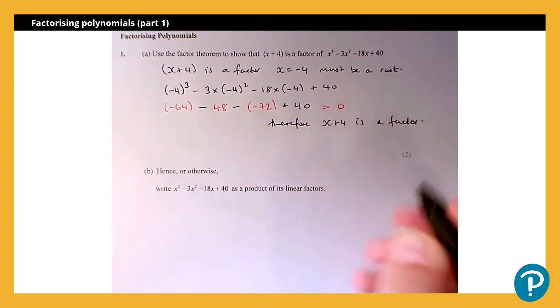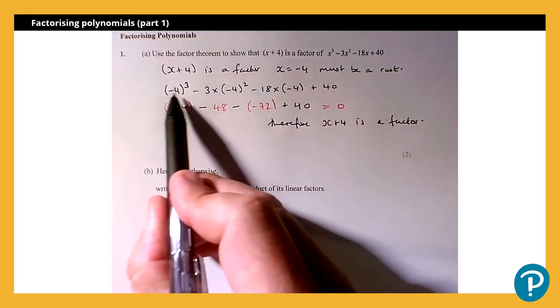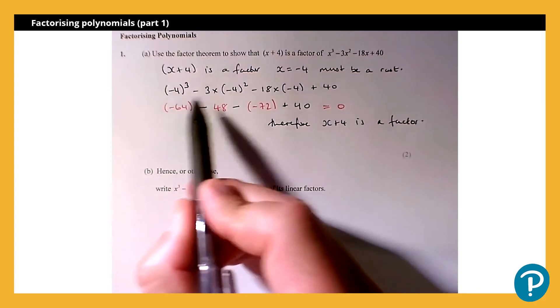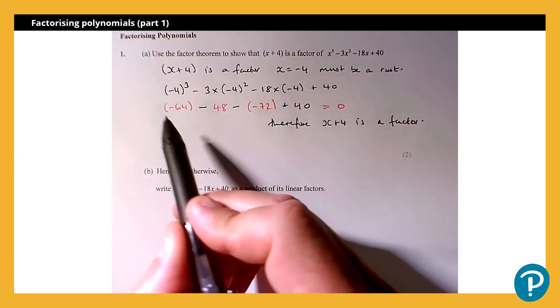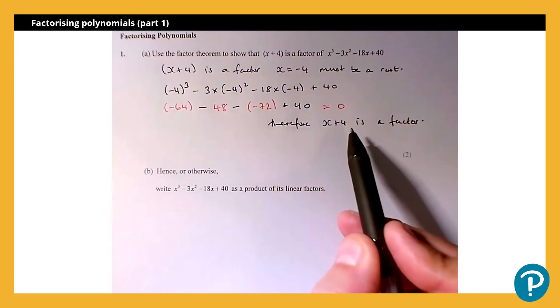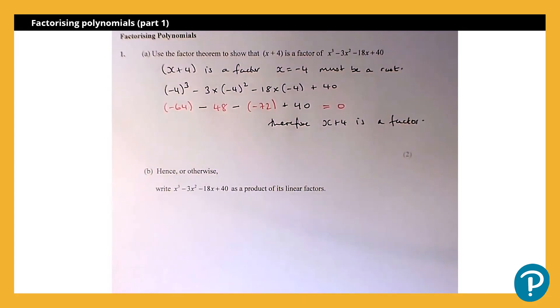Now two marks here. The first mark, the method mark, would be for the substitution, knowing that we need to substitute x=-4 into the expression. The second mark would be for evaluating that correctly, showing it is equal to 0, and therefore stating that x+4 is a factor.